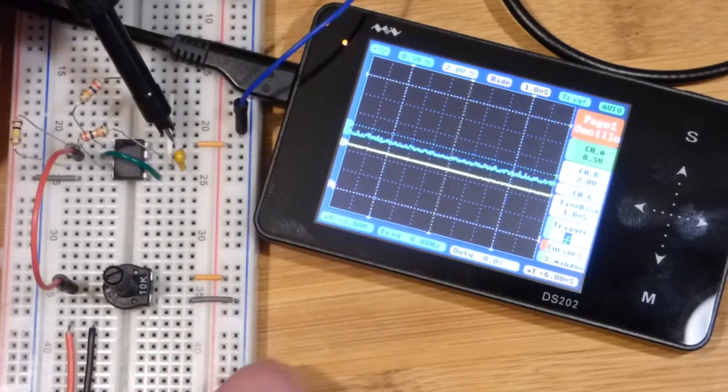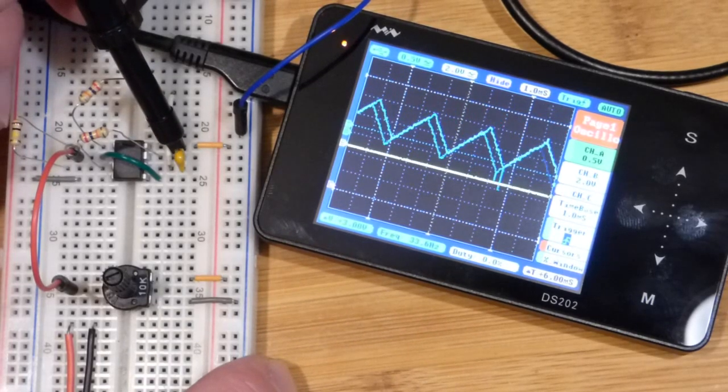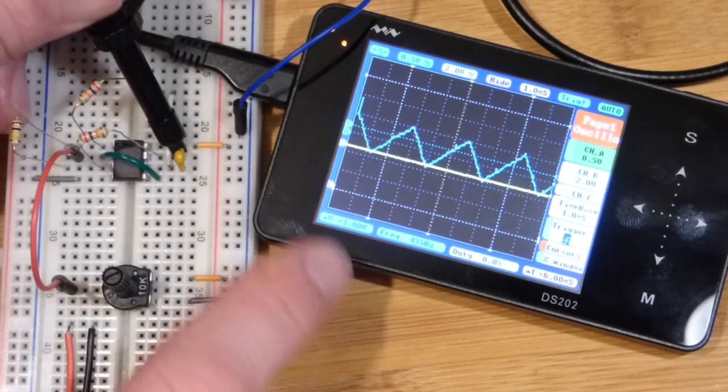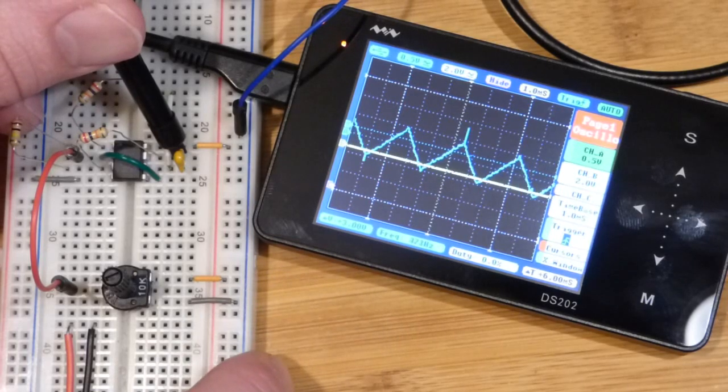With the digital oscilloscope here, you can see that we have a triangle wave.